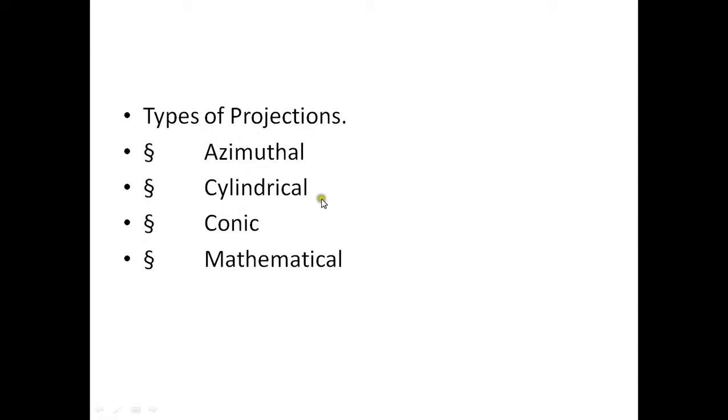There are four different types of projections: azimuthal, cylindrical, conic, and mathematical. Generally we use cylindrical and conic projection systems more often. In the upcoming lectures I will use the cylindrical projection system, so I will give more emphasis on the cylindrical coordinate system here.